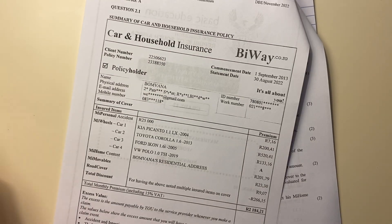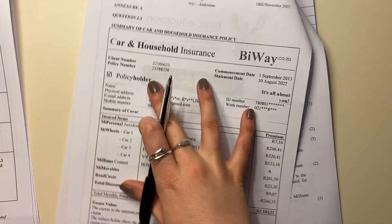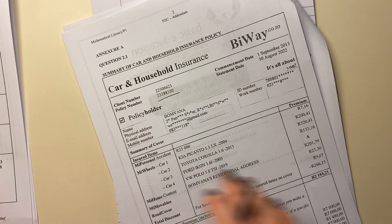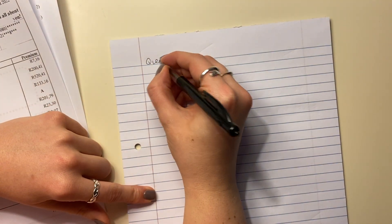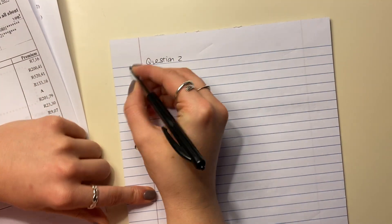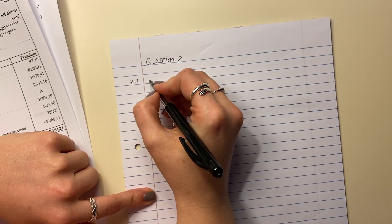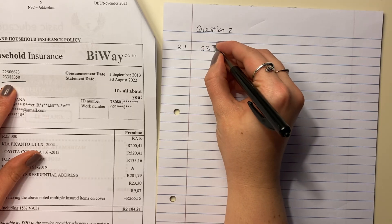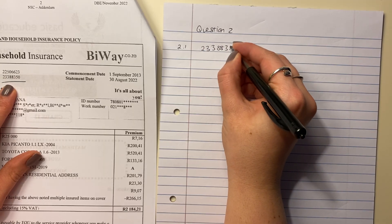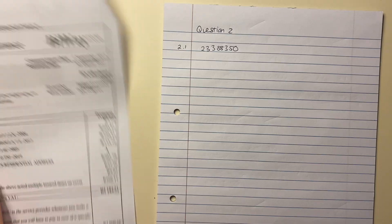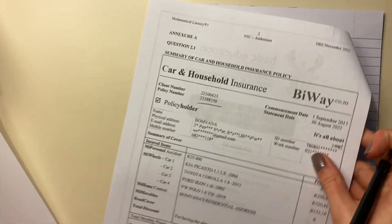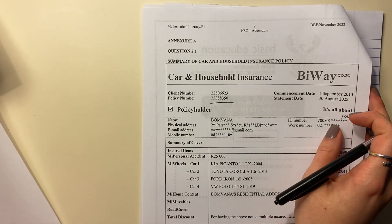Not a difficult question. The policy number is right there if you look over here. So we're going to write this down. Remember, always start on a new page. So we're going to say question two — hopefully you have nicer handwriting than me. The policy number is 23388350. Just make sure that you are writing that correctly — don't make any mistakes there, but it's quite an easy one.